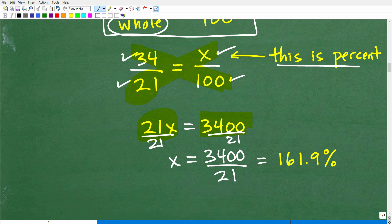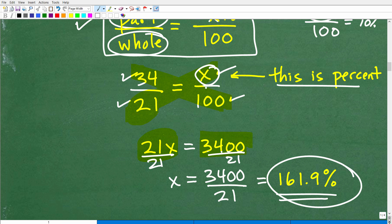So 3,400 divided by 21, we do that in our calculator. We get 161.9%. We don't have to change anything because we just solved for this number right here, X,